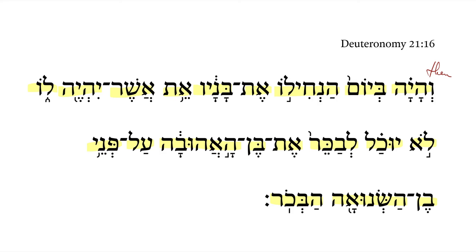Then it shall come about — here's a qal perfect third masculine singular plus the vav-consecutive, so we have the vekatal form.